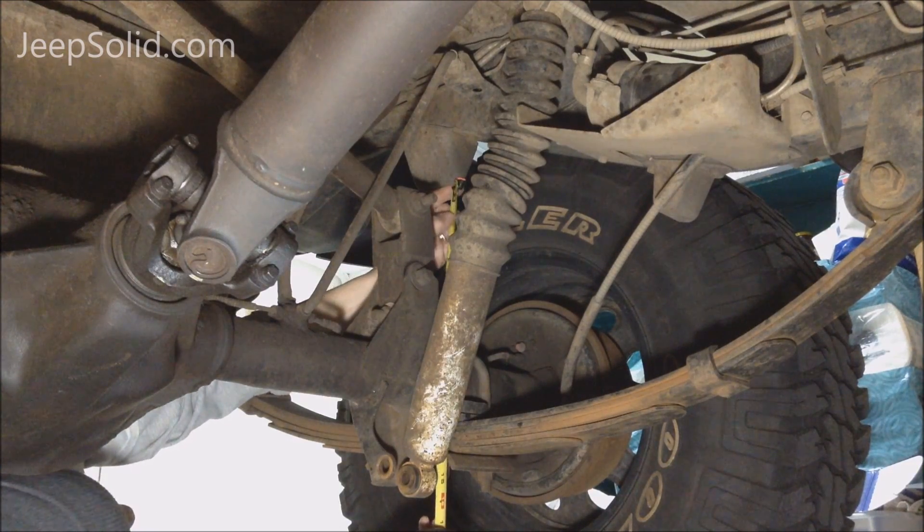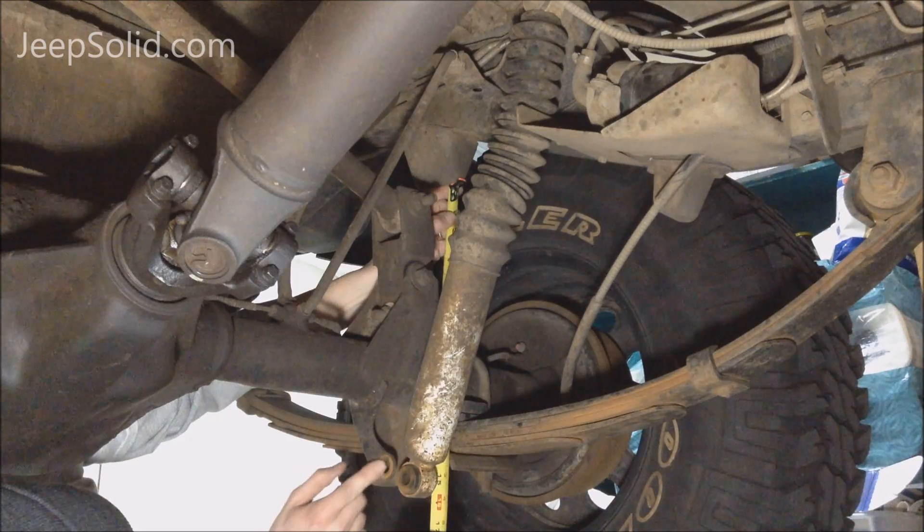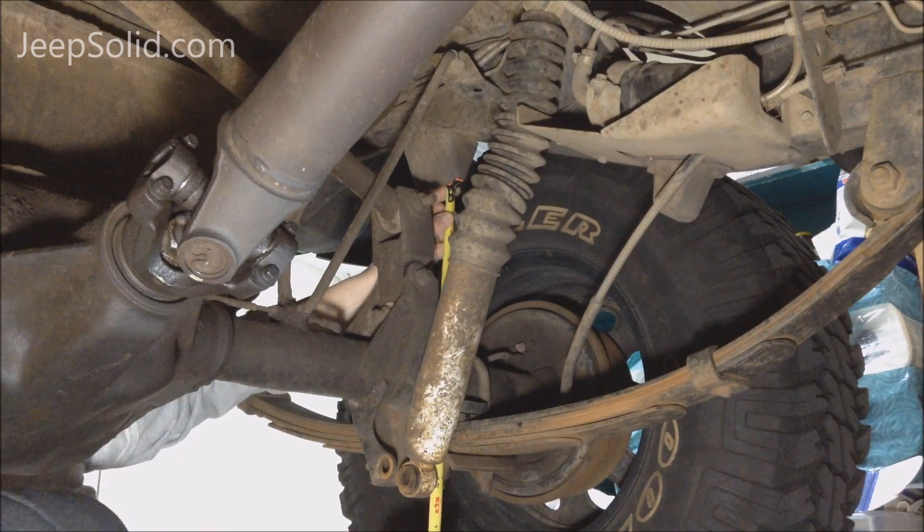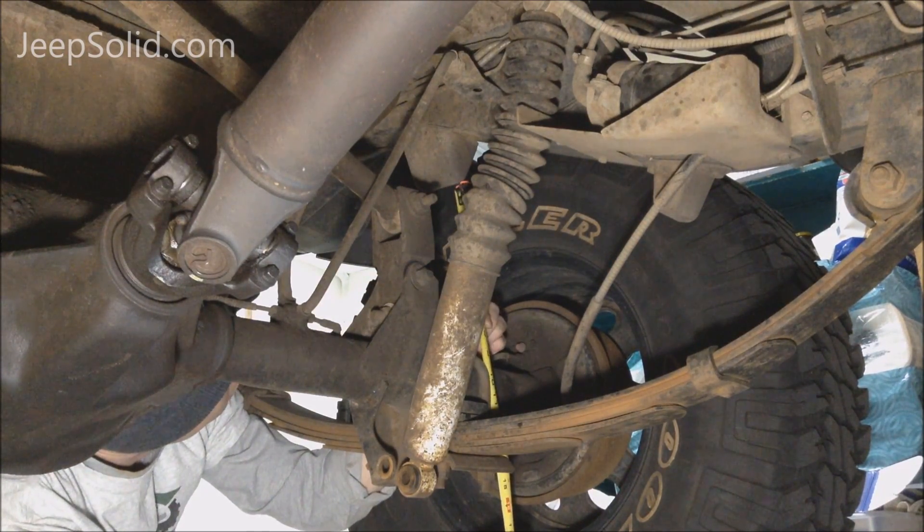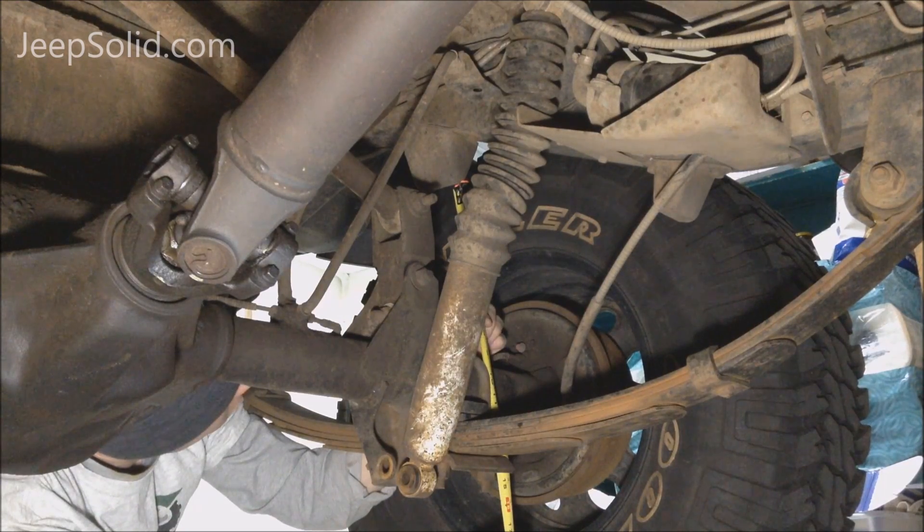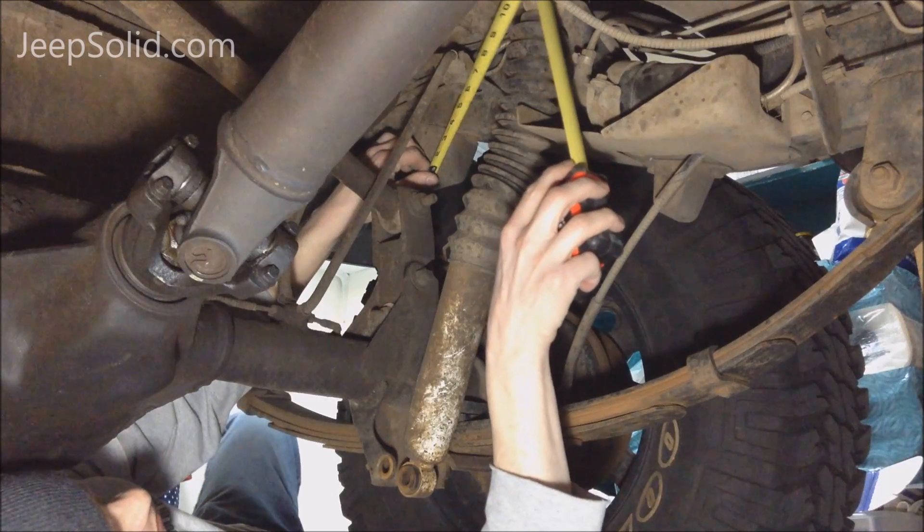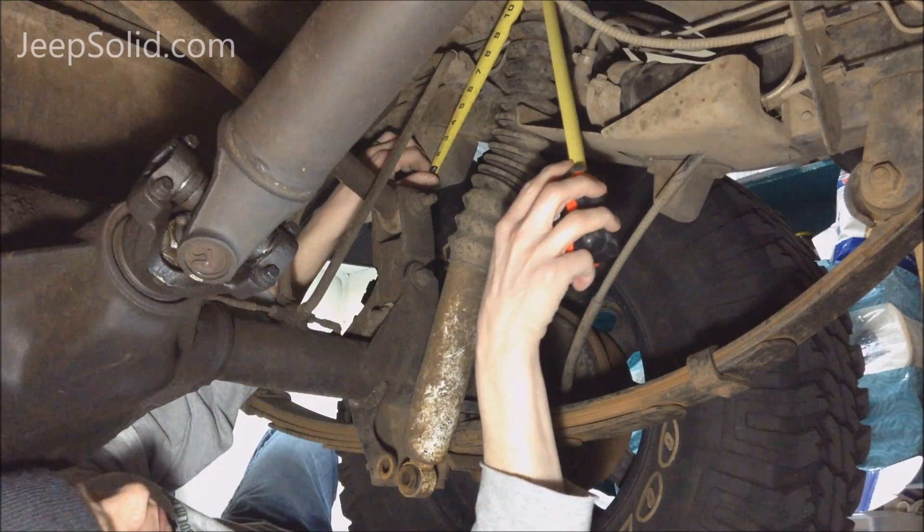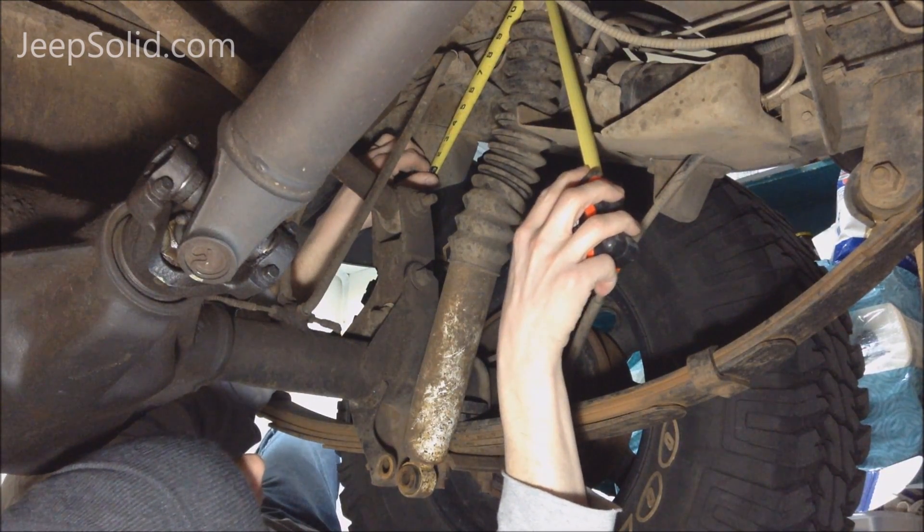The next measurement I'm going to take is from the bump stop down here to where it mounts on the axle, and that is 14.5 inches. Then I'm going to measure from the bump stop to the top of the axle, and that is 9 inches. The last measurement I'm taking is from the center of the bump stop to where the top of the shock mounts, and that is 11 inches.